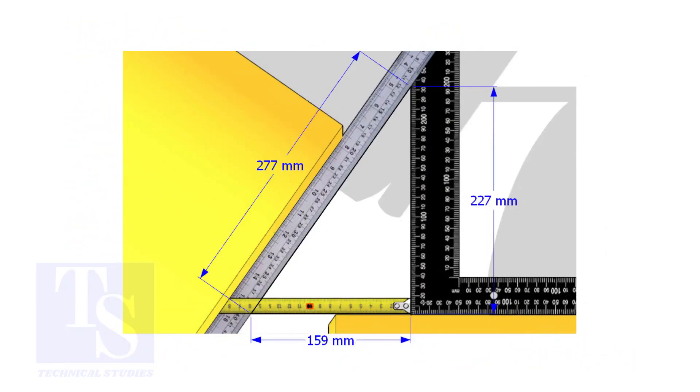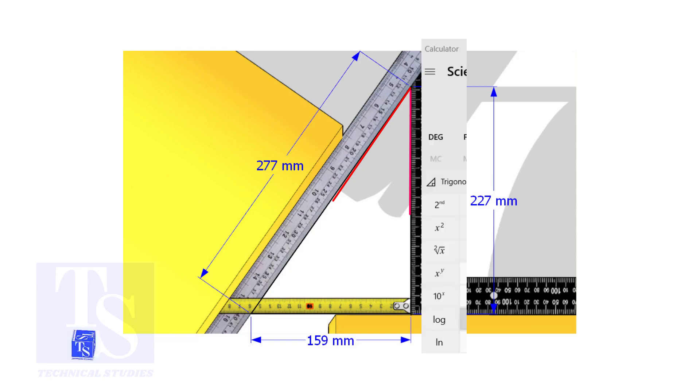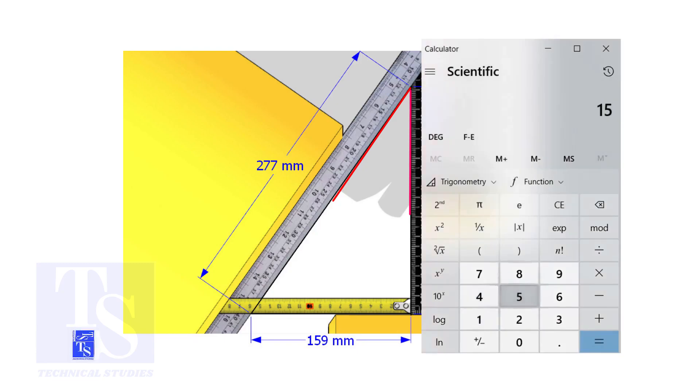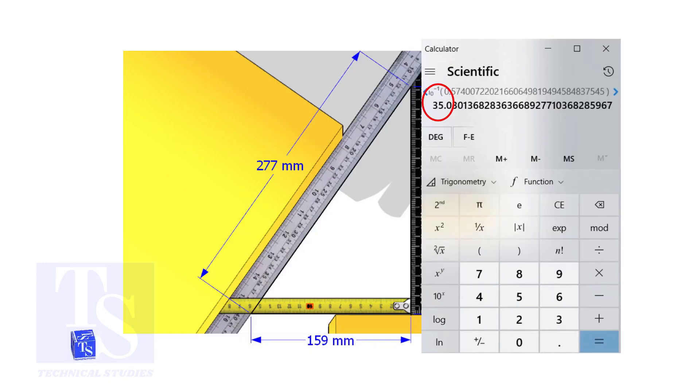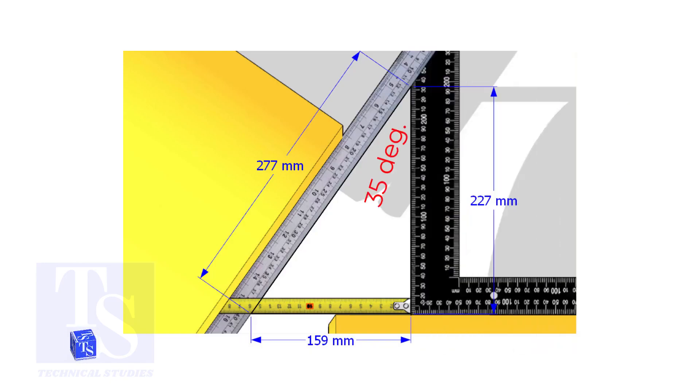Let us calculate the including angle. If you apply the sine rule, the angle will be 159 divided by 277 shift sign. So the answer is 35 degrees.